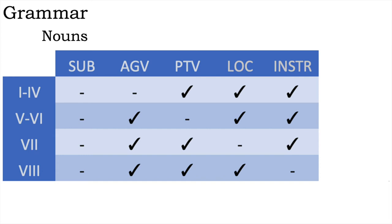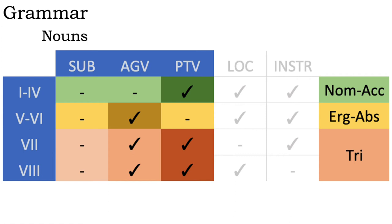An entirely unintentional corollary of this mark-when-unexpected system is that the language's alignment is all over the place. Classes one through four are nominative-accusative, meaning the subject and agent are marked the same while the patient is marked differently. Classes five and six are ergative-absolutive, meaning the subject and patient are marked the same while the agent is marked differently. And classes seven and eight are tripartite, meaning all three — subject, agent, and patient — have separate markings. I think this is cool, and leads on to some funky clause-on-clause business in the syntax.